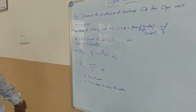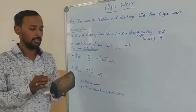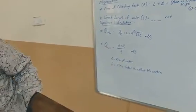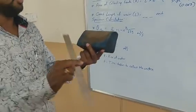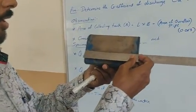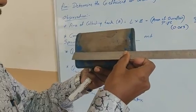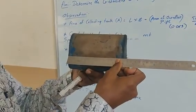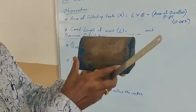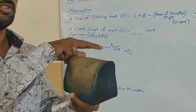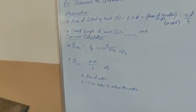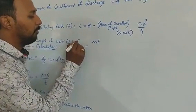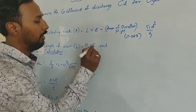Next, crest length. Crest length — we have to measure the length of this weir. That is 15 centimeters, that is 0.15 meter. This is the crest length, and the water flows over this crest.